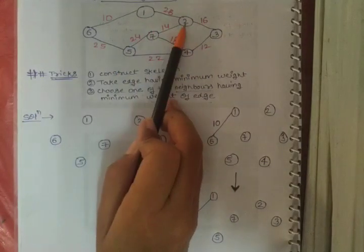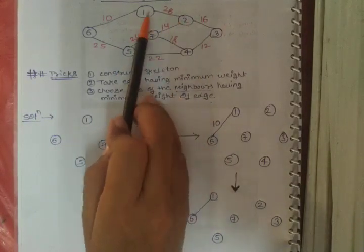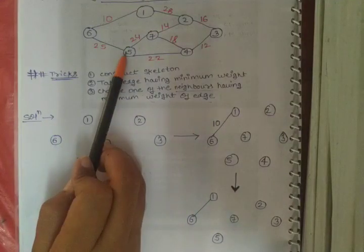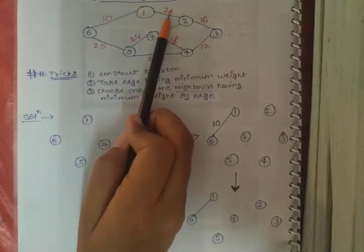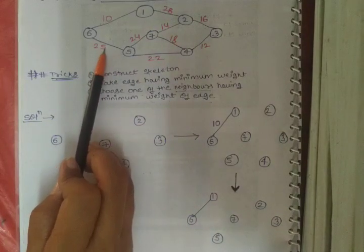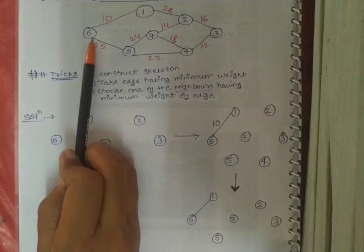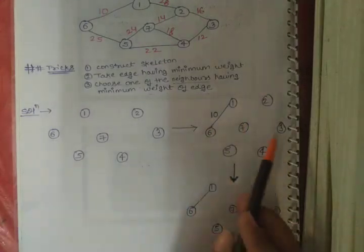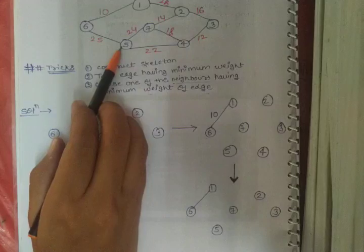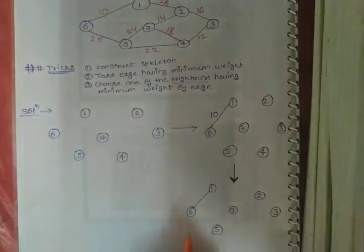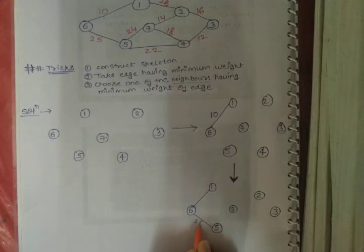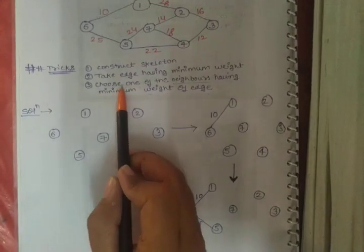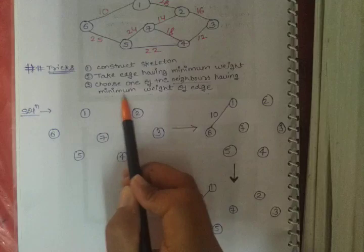So the minimum between 25 and 28 is 25. Therefore this edge - from node 6 to node 5 with weight 25 - must be selected in our third step. In the next step we construct this edge, adding weight 25 alongside the existing weight 10. We continue choosing neighbors of selected nodes with minimum weight edges.